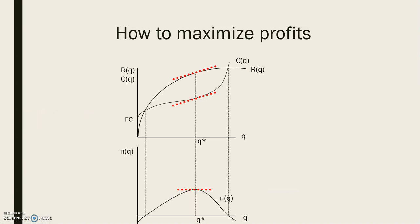In these two graphs, we can see the total cost function, which begins at a point above the origin. This is the total cost function, and it goes up. It begins at this point exactly where we have the fixed costs. So it begins at a point different from 0 on the y-axis, because even when the firm produces 0 units, it already has some fixed costs. The fixed costs are represented by this constant quantity on this axis.